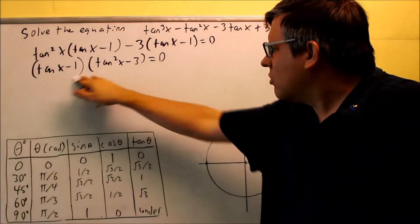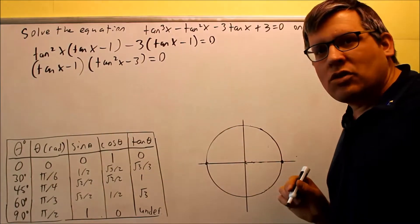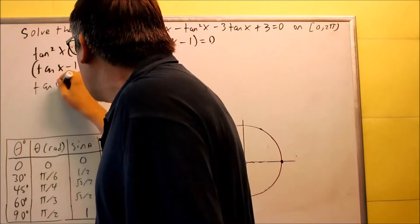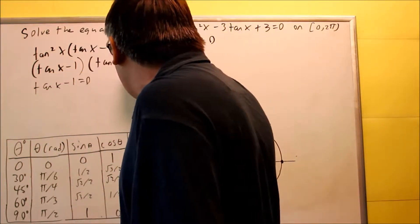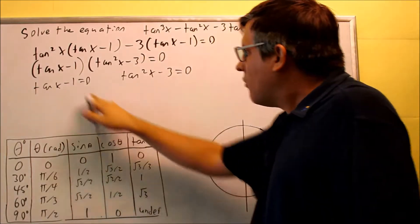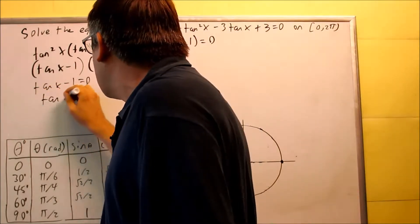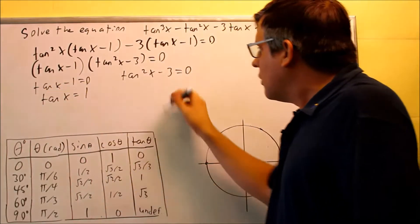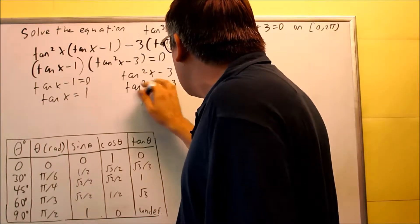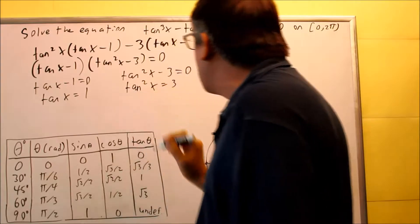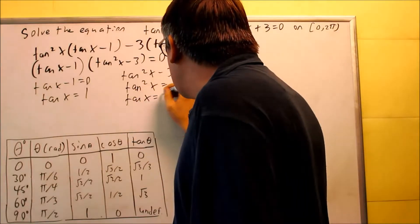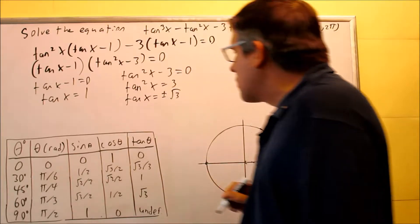So now we have it down to these two. Each of those individually you want to set equal to zero. So you're going to do tangent x minus one equals zero, and tangent squared x minus three equals zero. If you solve the first one, you get tan x equals one. For the second one, you get tangent squared x equals three. We add three to both sides, then square root both sides, and you get tangent x is equal to plus or minus the square root of three.